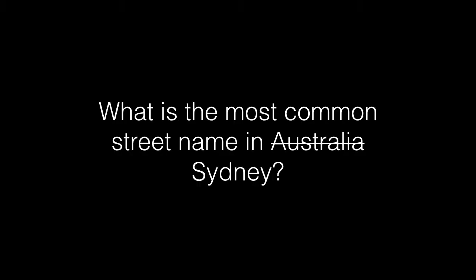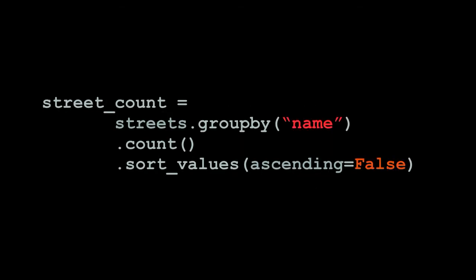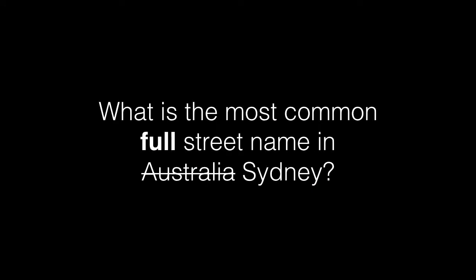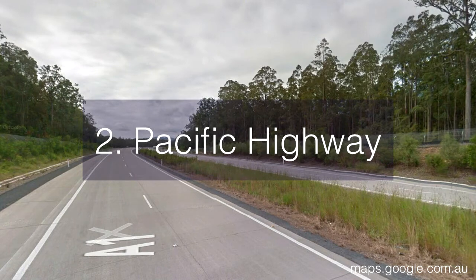What is the most common street name in Sydney? I'm just going to include the full name including the street, road, avenue part. In GeoPandas, you group by names, count how many there are, and sort the values. The most common full street name in Sydney? Victoria Road. There's a big Victoria Road that's about 22 kilometres long going out to Western Sydney — it's normally a bit more congested than this. Number two was Pacific Highway — and there's definitely only one Pacific Highway in Sydney, so it shouldn't be the second most common name.